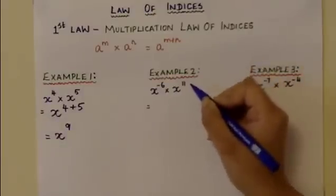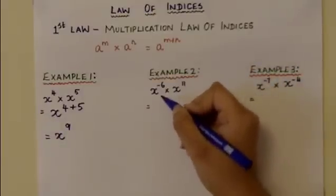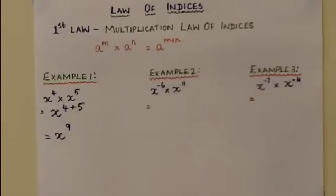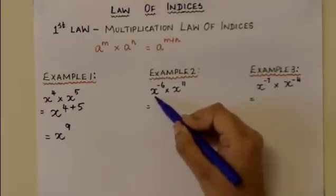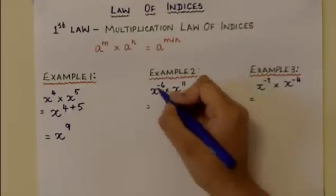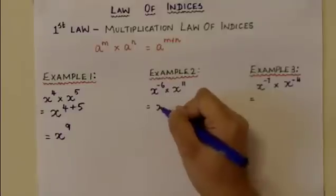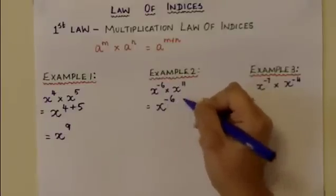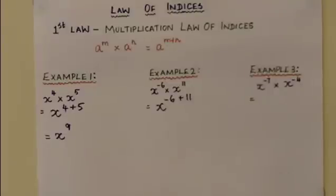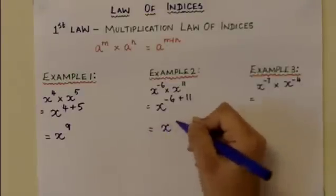The next one is example 2, where we have x to the power of minus 6 times x to the power of 11. This can be simplified as x to the power of minus 6 plus 11, according to the multiplication law of indices, and this is equal to x to the power of 5.